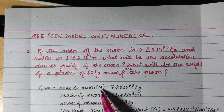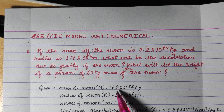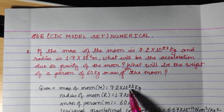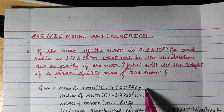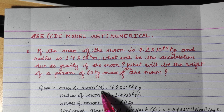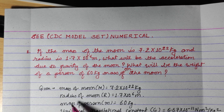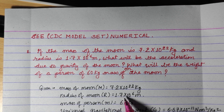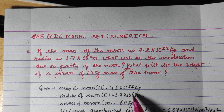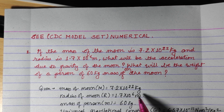Given: mass of the moon, capital M, is 7.2 into 10 to the power 22 kg. Radius of the moon, capital R, is 1.7 into 10 to the power 6 meter.